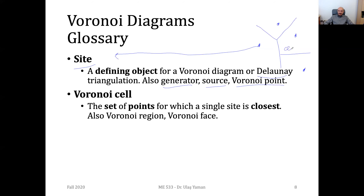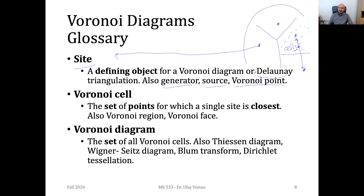These regions are all called cells, and a cell is a set of points for which a single site is closest. Any point inside a cell has a distance to its Voronoi site that is smaller than its distance to any other site. The whole set — composed of vertices and edges of the Voronoi diagram — is called the Voronoi diagram, which is the set of all Voronoi cells.